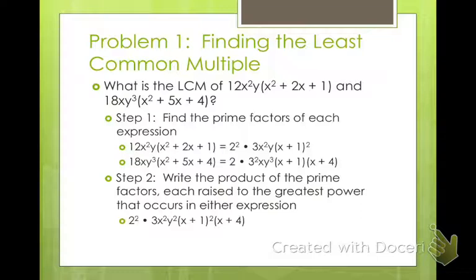So 2², we have 3² (should be 3²). We have x². We have y cubed. x plus 1 squared, and x plus 4. So you include all the factors: 2 is accounted for, 3 is accounted for, x is accounted for, y was accounted for, x+1 was accounted for, and x+4 is accounted for. And then you use the greatest powers for all of that. And then you just go ahead and you simplify that big mess of things.